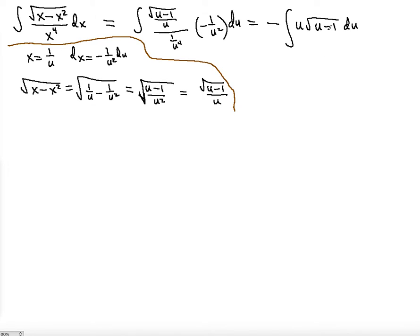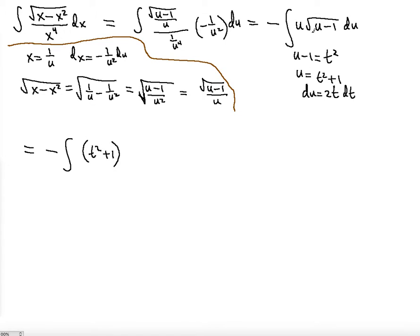Now we need one more substitution. Since we have a square root, we're going to use u minus 1 equals t squared. Naturally, square root calls for t squared and not just t. So u is going to be t squared plus 1, and du is going to be 2t dt. Rewriting the integral: u was t squared plus 1, and square root of u minus 1 is just t, and du was 2t dt.